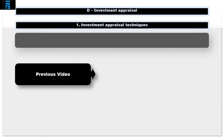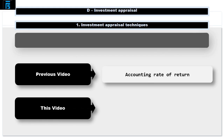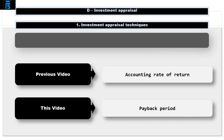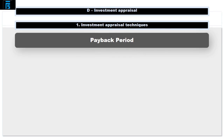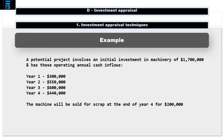In the previous video, we introduced the idea of accounting rate of return as a method for appraising a potential investment opportunity. Let's now have a look at the second non-discounting technique: payback period. The payback period for a project is the time it takes to recover its initial investment. It's the time it takes for the project to pay for itself.